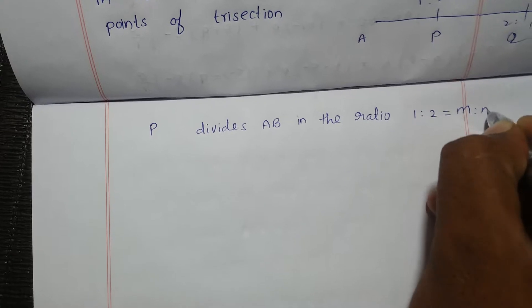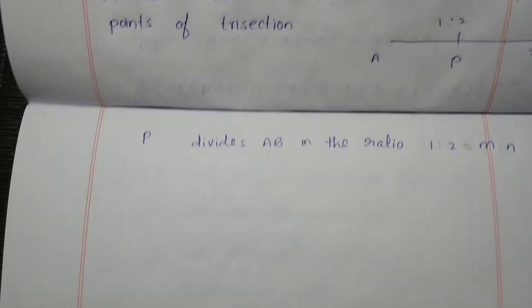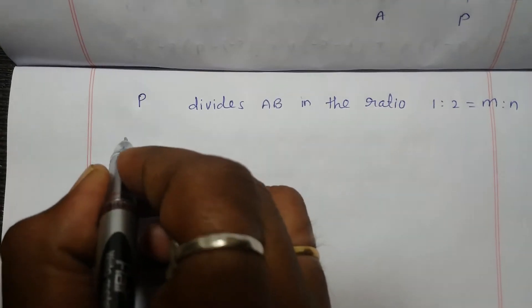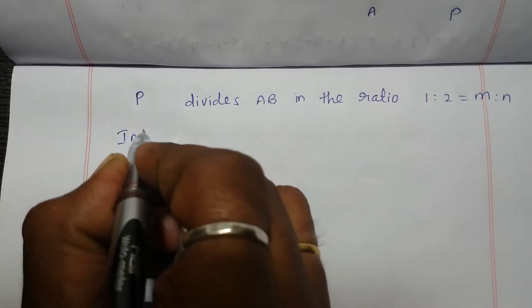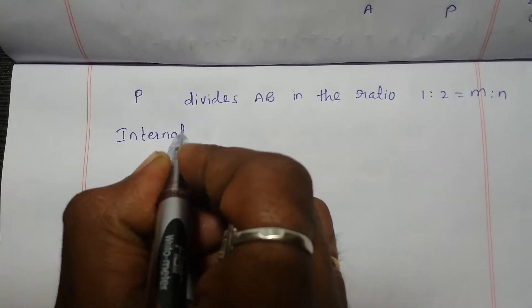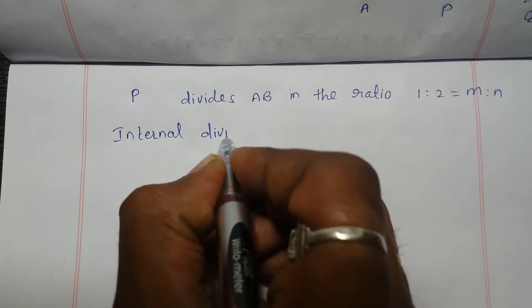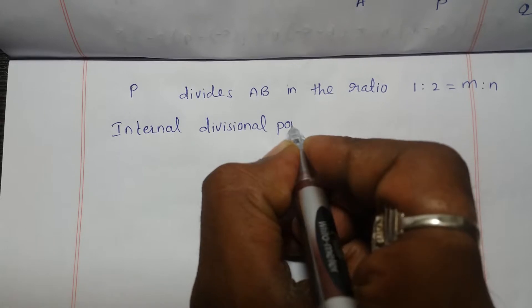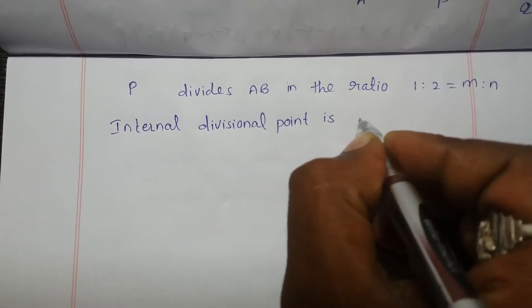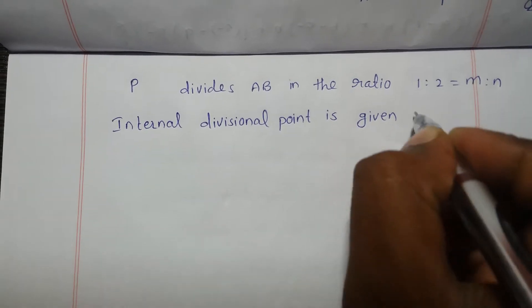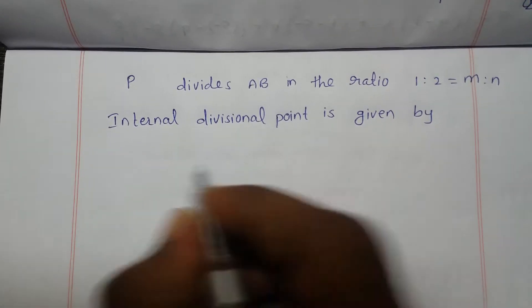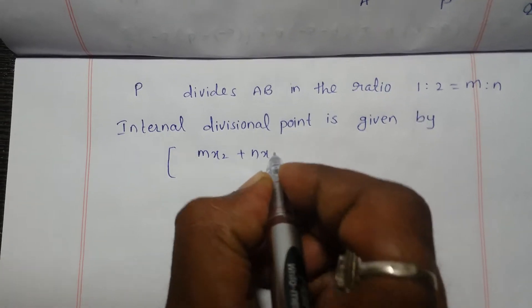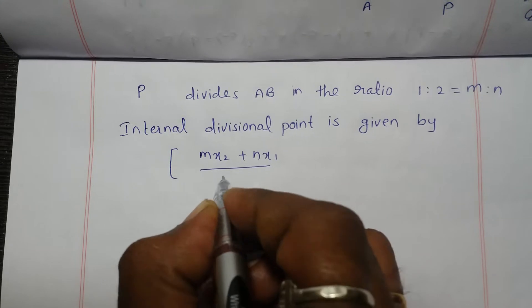For point P, m1:m2 equals 1:2. This is the internal division point. The section formula gives the point as (m·x2 + n·x1) / (m + n), (m·y2 + n·y1) / (m + n).